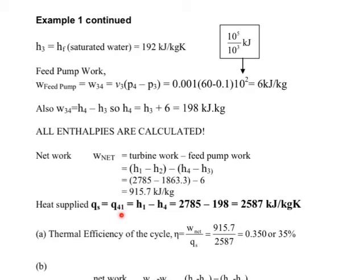The heat from point 1, remember that is at the turbine inlet, we are assuming no losses between the boiler output and the turbine inlet, minus H4 which is the enthalpy immediately after compressing the condensed steam from 0.1 bar to 60 bar. And so we have H1 minus H4, 198 and we get 2,587 kilojoules per kilogram K.